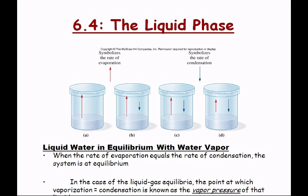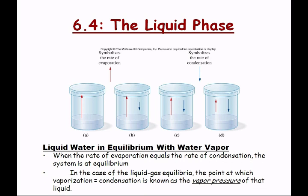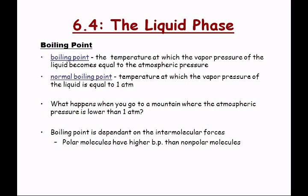Evaporation is endothermic — recall the acetone beaker. In the case of liquid-gas equilibria, the point at which vaporization equals condensation is known as the vapor pressure of that liquid. When you're at equilibrium, you can measure how much pressure the gas on top of the liquid is exerting — that's the vapor pressure. We have to wait until equilibrium to determine the vapor pressure. We'll talk about vapor pressure more later.